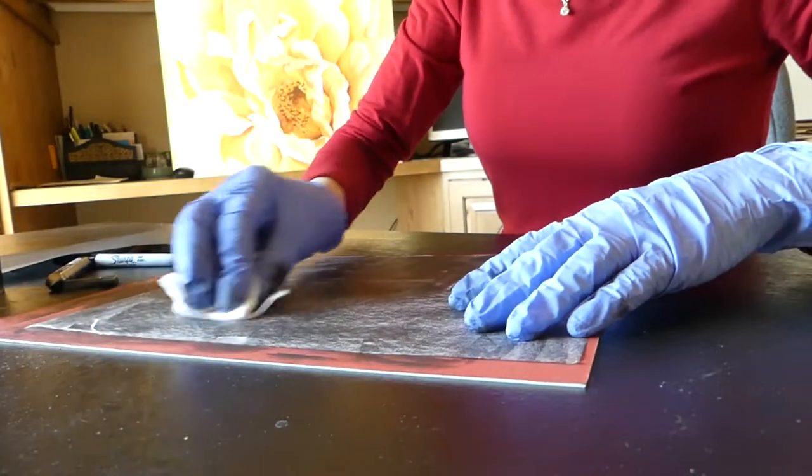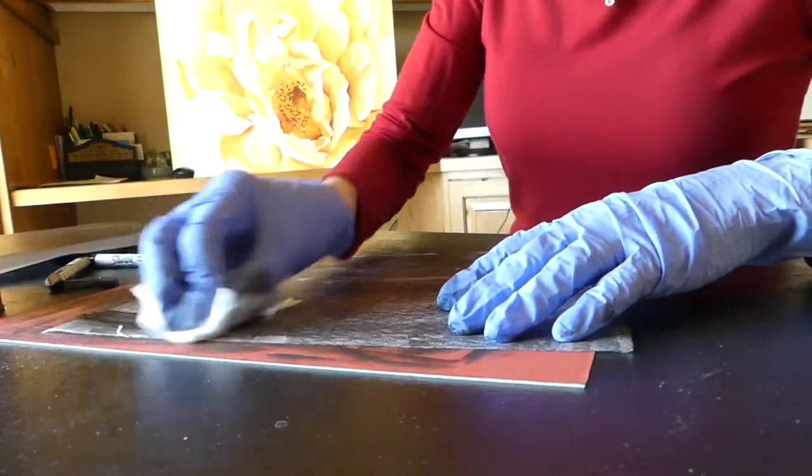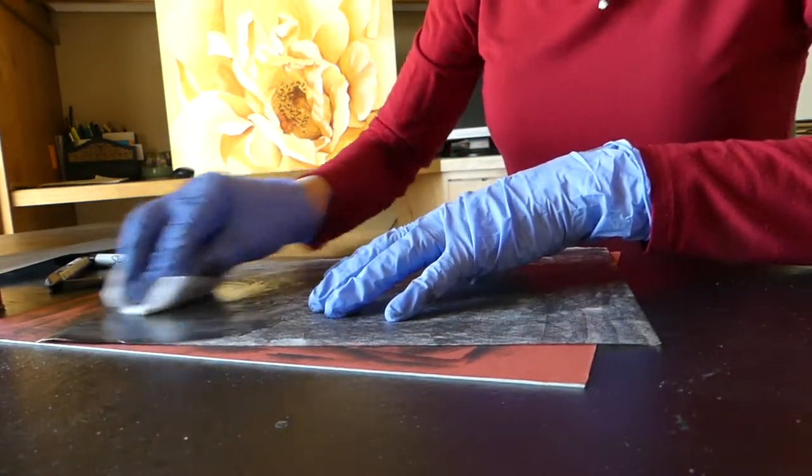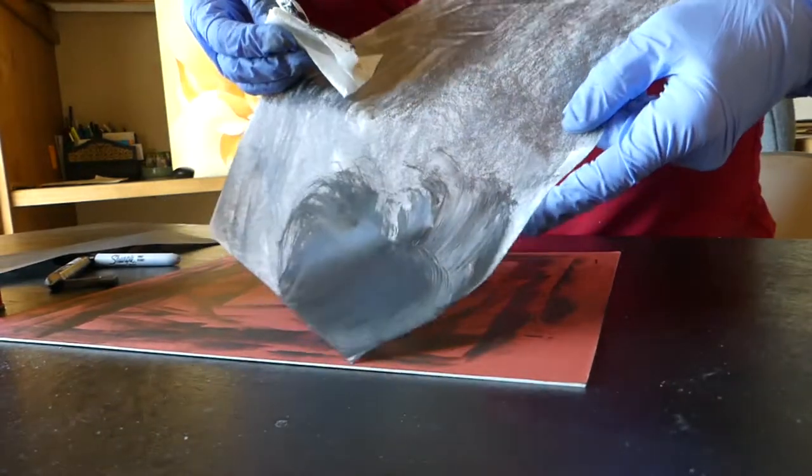And then what I'm going to do is, a little bit more on there, I'm just going to, on the paper towel, gently rub. And when I do that, it will start blackening and emulsifying that in.